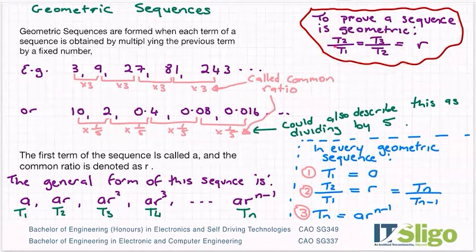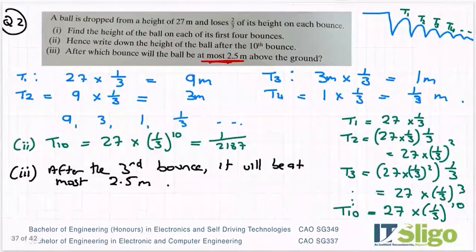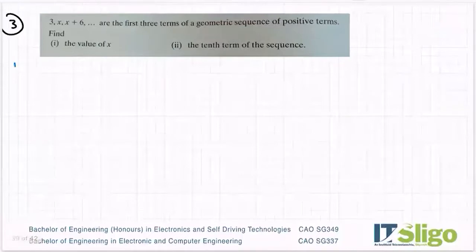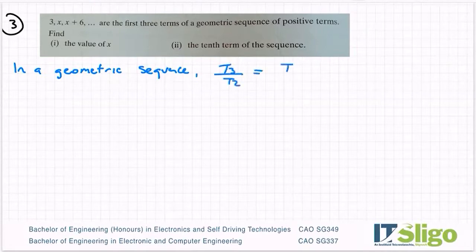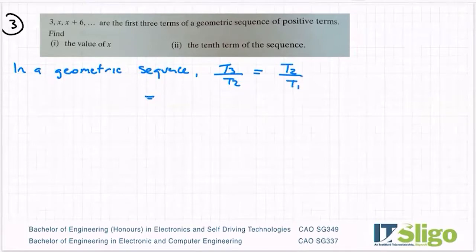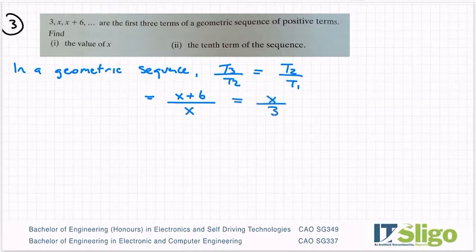Because we have three terms - T1, T2, T3 - in our sequence, we're going to play with this and see if we can solve for x. Okay, so let's write down that bit of theory. In a geometric sequence, T3 over T2 is equal to T2 over T1.